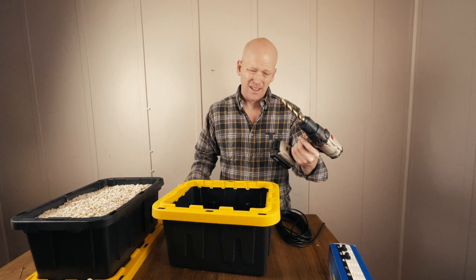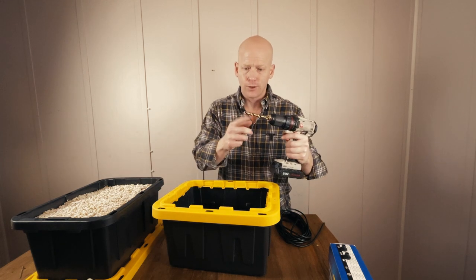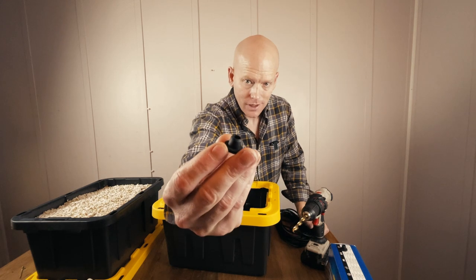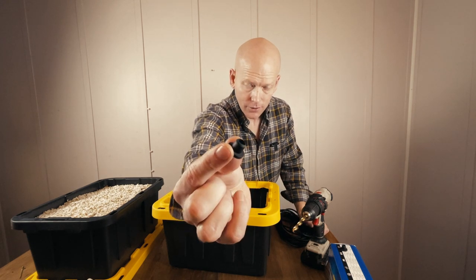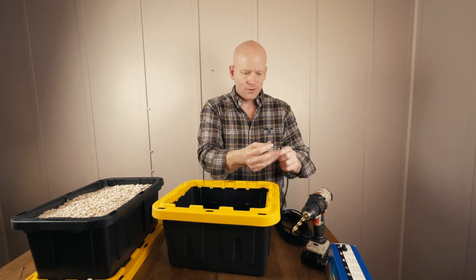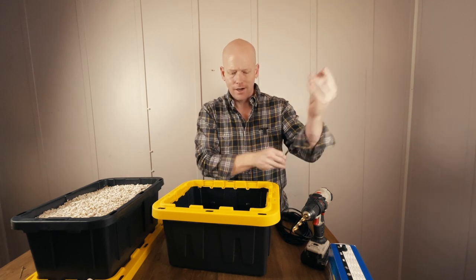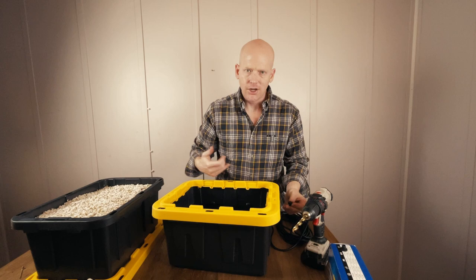I'm going to use a 25/64 drill bit. This drill bit is the same outside diameter and these grommets are really useful because this 3/16 air line just slides right in it and it'll keep water from splashing out the sides.